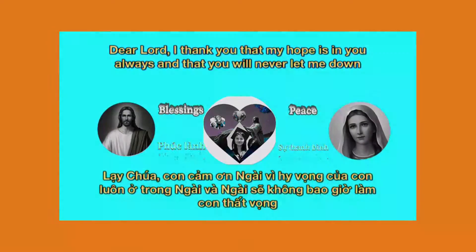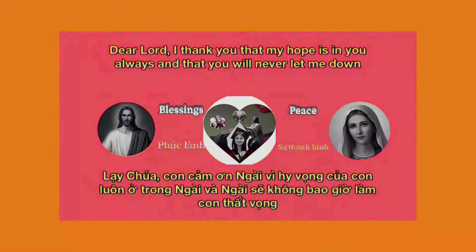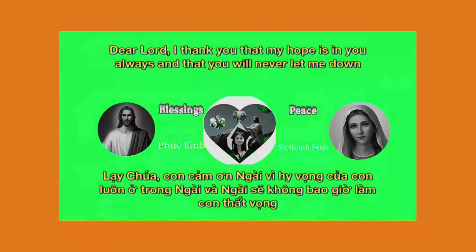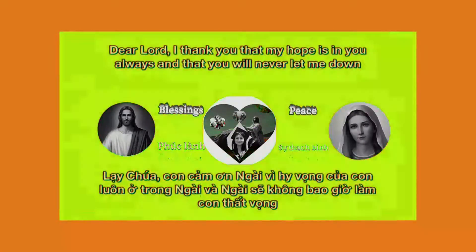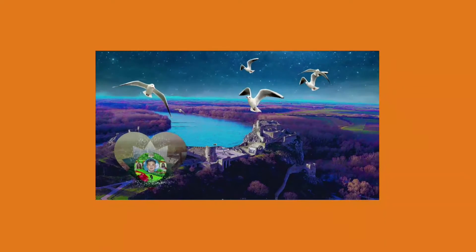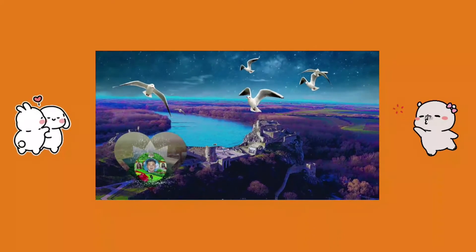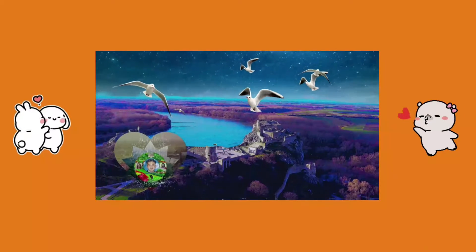What is an example of a moral principle? Moral principles are guidelines that people live by to make sure they are doing the right thing. These include things like honesty, fairness, and equality.